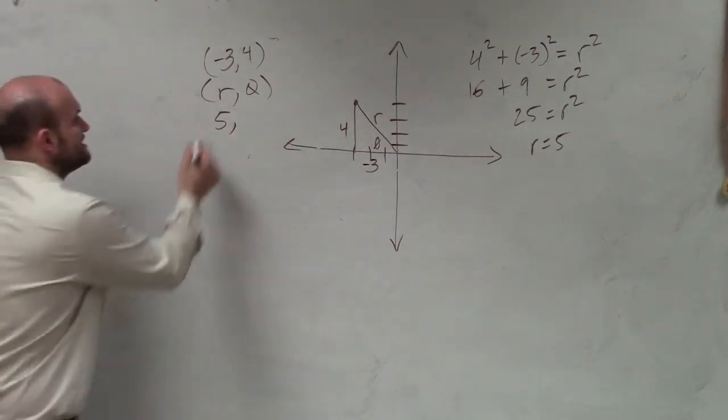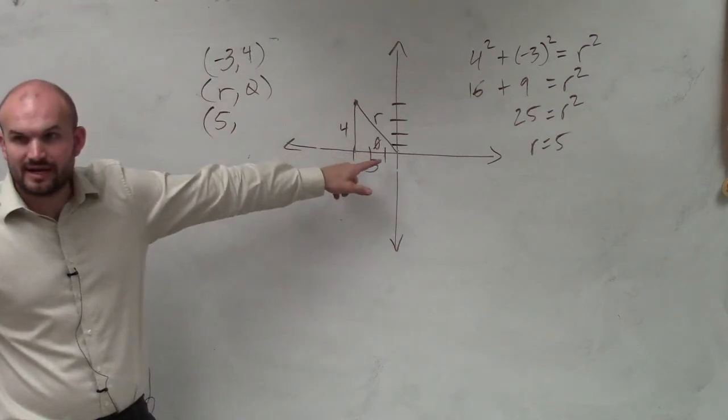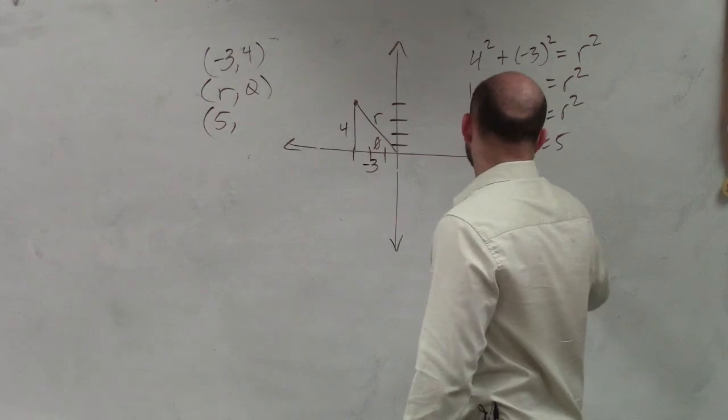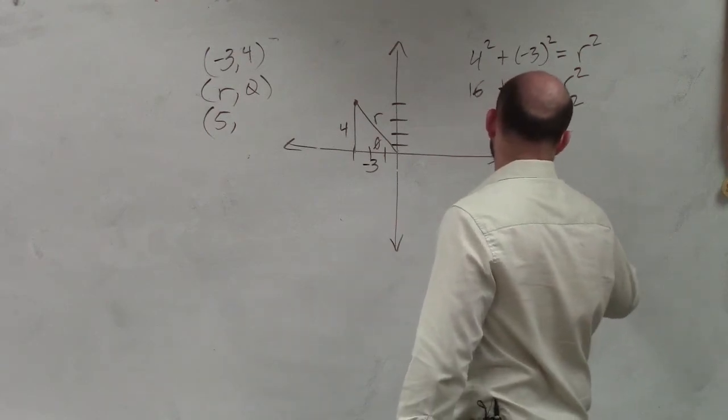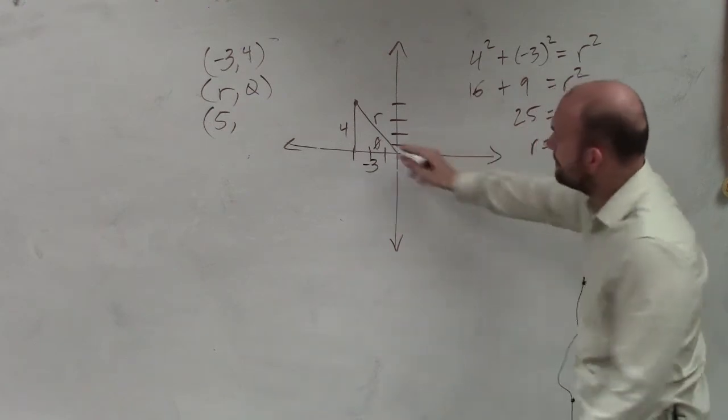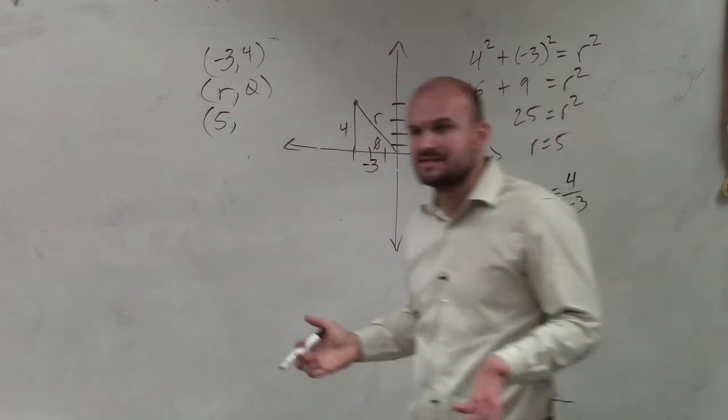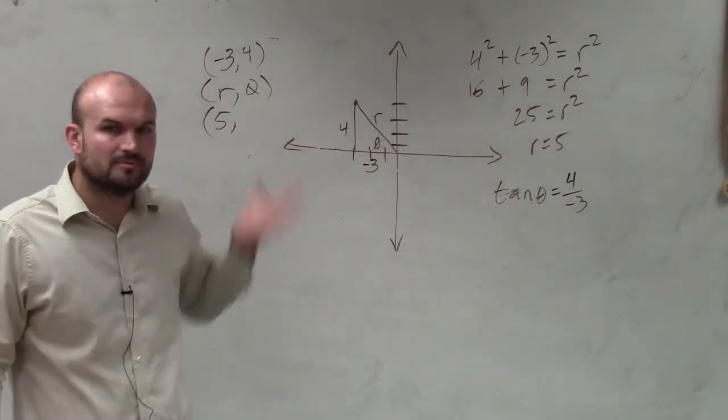Now I just need to figure out what is theta. If we know these two sides, can we figure out what theta is? Of course we can. Tangent of my angle theta equals opposite over adjacent, 4 over negative 3. Nothing that we're going over is anything that we haven't discussed before. All we're trying to do, convert from rectangular to polar, is finding the radius and theta.